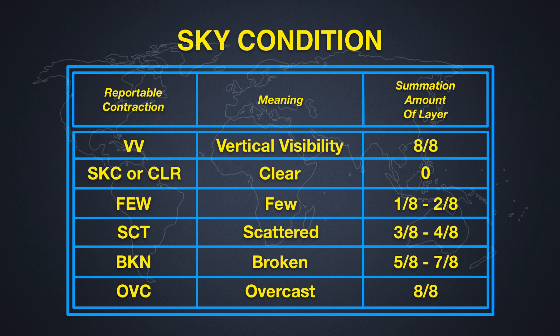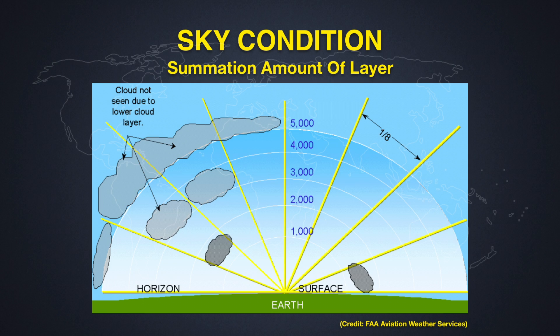Here you can see an illustration from the FAA Aviation Weather Services that shows the eight quadrants and how it's broken down — where it might be one-eighth, four-eighths, seven-eighths, and so on. This is just a quick illustration to show you what the eight quadrants look like when measuring the sky conditions.